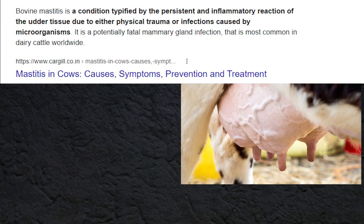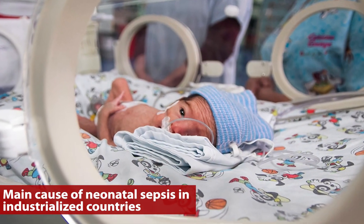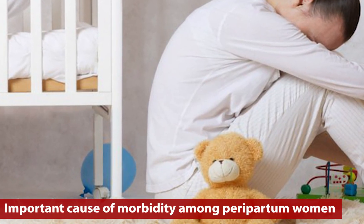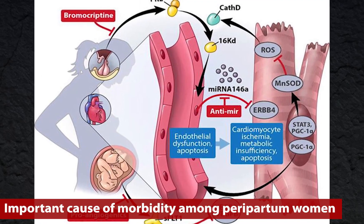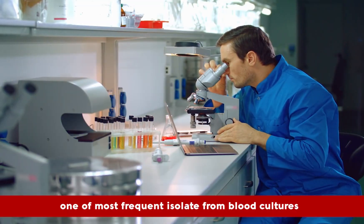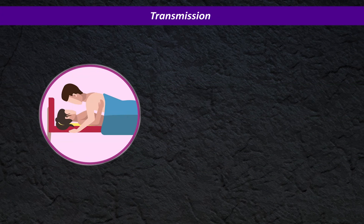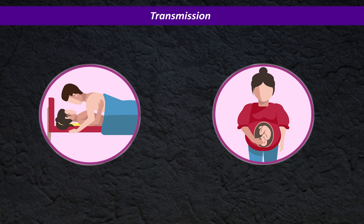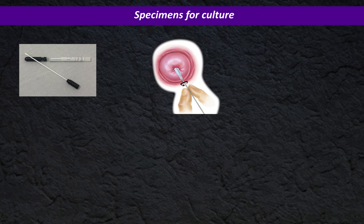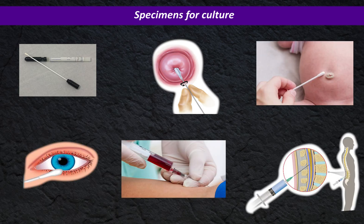Previously, S. agalactiae was recognized as a cause of bovine mastitis; however, since 1960 it has become the main cause of neonatal sepsis in industrialized countries, and it is an important cause of morbidity among peripartum women and other adults with chronic medical conditions. S. agalactiae is one of the most frequently isolated organisms from blood cultures. It can be transmitted among adults sexually and from an infected mother to her newborn. High vaginal swabs, cervical swabs, umbilical swabs, eye swabs, blood, and spinal fluid can be used for culture.